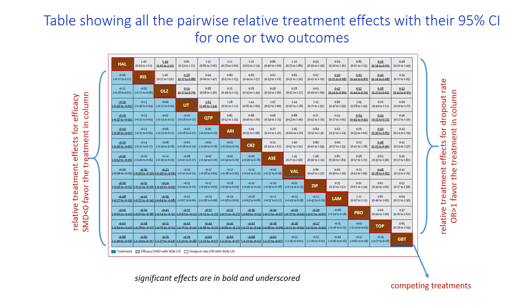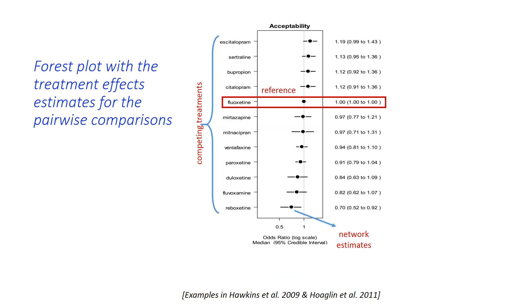One of the challenges is how to present the complex set of outputs. It is useful to report estimates for all pairwise treatment comparisons with their corresponding uncertainty intervals, possibly for more than one outcome. Alongside the network meta-analysis estimates, the direct estimates can be presented to provide a complete and transparent picture of the available results. Most published articles use a league table like this one or a forest plot-type graph to report this information.